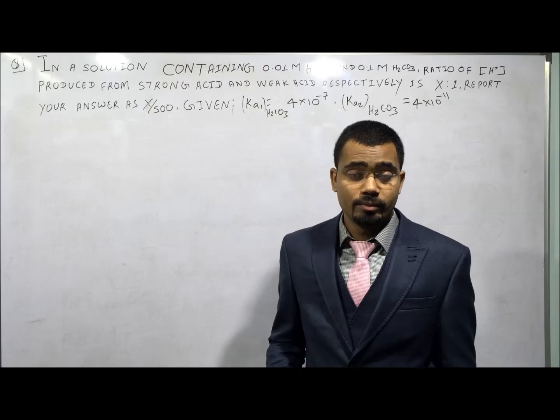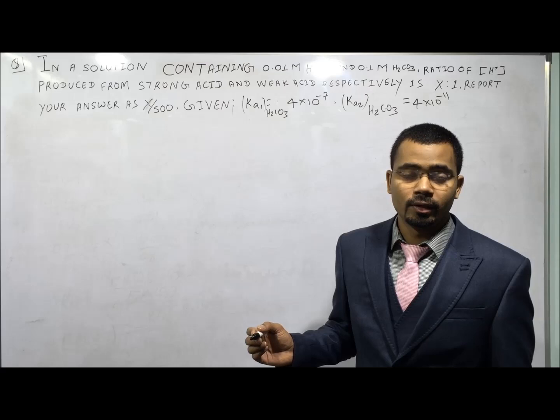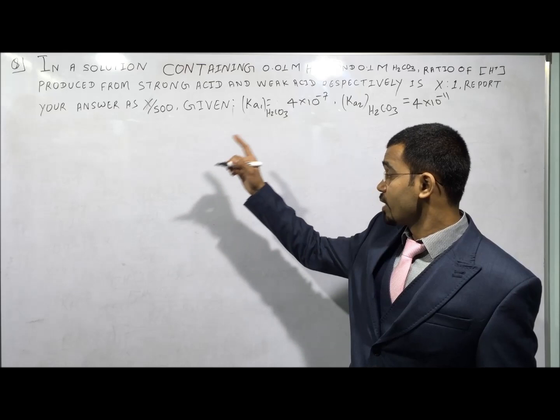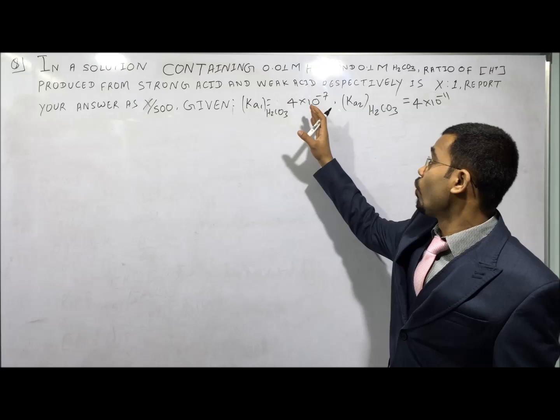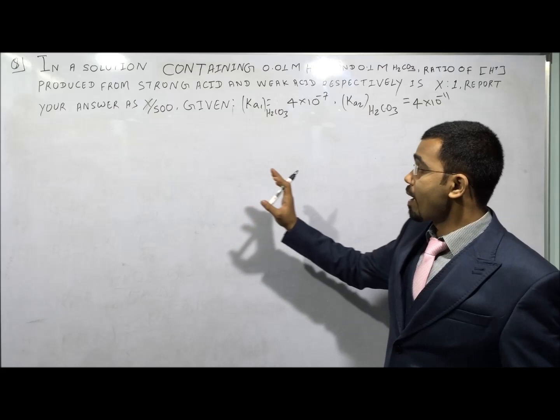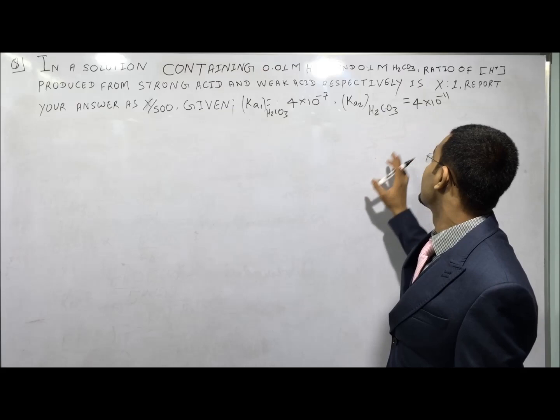Hello everyone. Now I am going to solve a doubt which is asked by Nachiketa from Mumbai, India. The question is: in a solution containing 0.01 M HCl and 0.1 M H₂C, the ratio of H⁺ produced from the strong acid and weak acid respectively is X to 1.